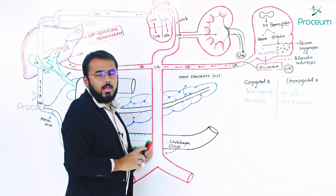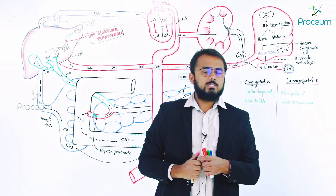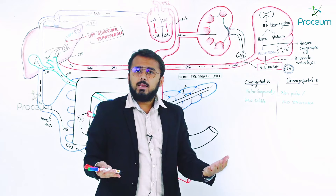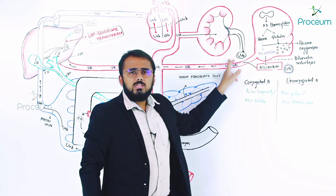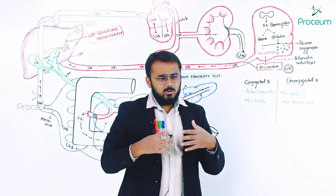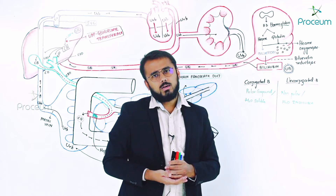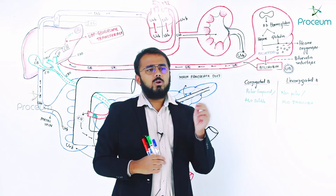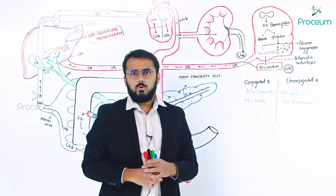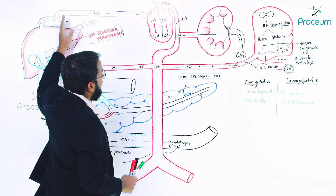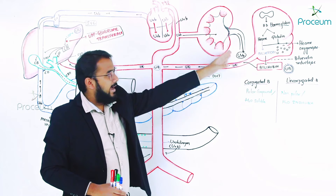Urobilinogen is colorless. When you urinate and see pale yellow color, it is because other metabolites like bilirubin mix with the urine and impart the pale yellow color. If only urobilinogen were present, the urine would be absolutely colorless. In this way, 50% of urobilinogen goes through portal circulation to the heart, kidney, and gets excreted.